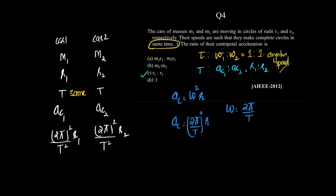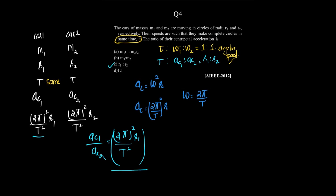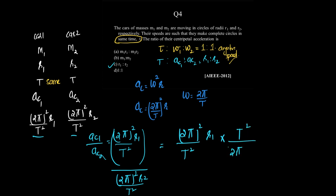Taking the ratio ac1 to ac2: we have (2π)²/T² × r1 divided by (2π)²/T² × r2. The (2π)² and T² terms cancel out, leaving r1/r2. This confirms the answer is option C.